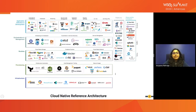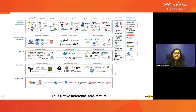The top layer is the application definition and development layer. This layer mainly focuses on the tools which enable developers to build applications and allow them to function. It defines application composition and application-specific configuration related to deployment properties, image repositories, continuous integration and delivery platforms, and many others. This is a high-level view of the cloud native reference architecture provided by CNCF.